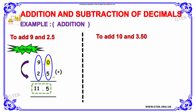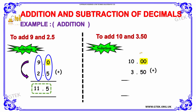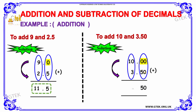We will see the next example. We are going to add 10 and 3.50. Since 10 is a whole number, we have added zeros. Now we can simply add the first term and the second term. The ones place: 0 plus 0 is 0. The next term: 0 plus 5 is 5. Keeping the decimal point, we add 0 plus 3, that is 3, and the 1. So the answer is 13.50.